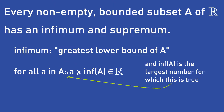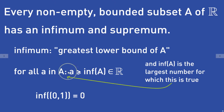Also, the infimum of A doesn't have to be an element of the subset A. For example, the infimum of the open interval (0, 1) is equal to 0. And 0 is not an element of the open interval (0, 1). But 0 fulfills this condition, and 0 is also the largest number for which this condition holds true.